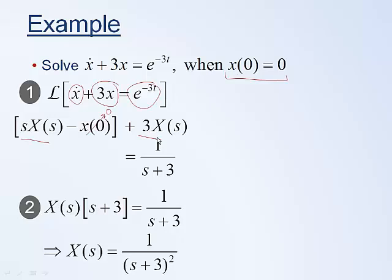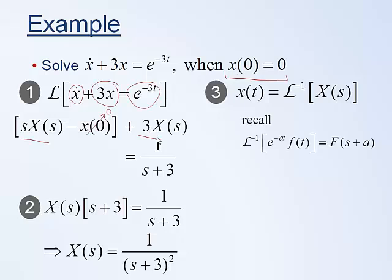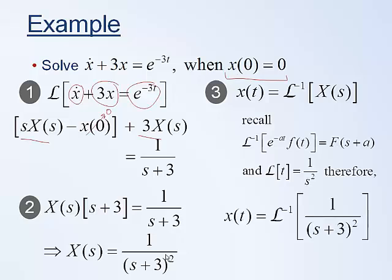The final step is to take the solution back to the time domain using the inverse Laplace transform. We want x(t), found by taking the inverse Laplace transform of X(s) = 1/(s+3)^2. We recognize (s+3) as a shift with a equals 3, and 1/s^2 is the Laplace transform of a ramp. Combining these two facts, the inverse Laplace transform is e^{-3t}·t. The function starts at t equals 0.